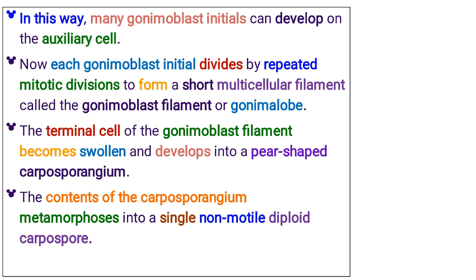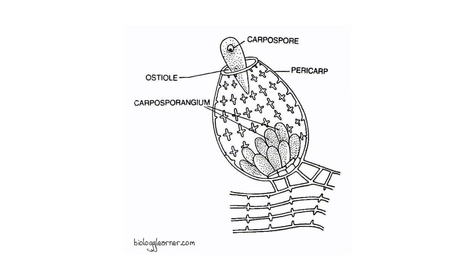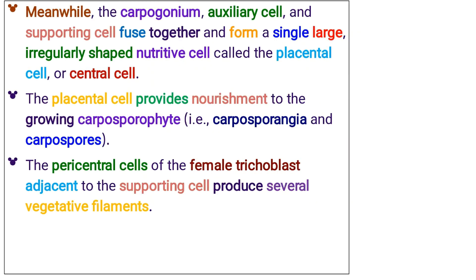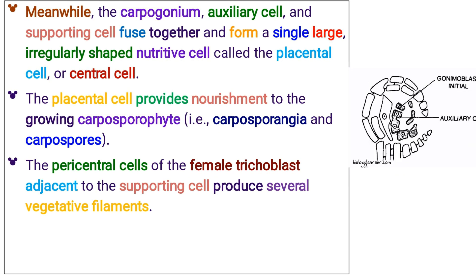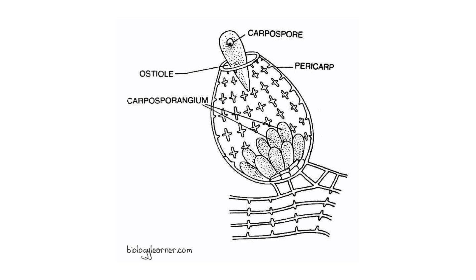The terminal cell of the gonomoblast filament becomes swollen and develops into a pear-shaped carposporangium. The contents of the carposporangium metamorphose into a single non-motile diploid carpospore. Meanwhile, the carpogonium, auxiliary cell, and supporting cell fuse together and form a single large, irregularly shaped nutritive cell called the placental cell, or central cell. The placental cell provides nourishment to the growing carposporophyte, that is, carposporangia and carpospores.